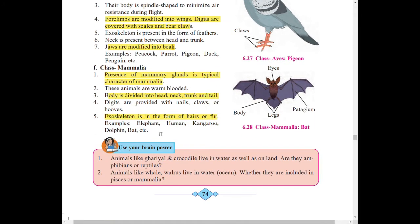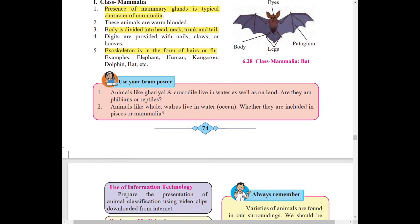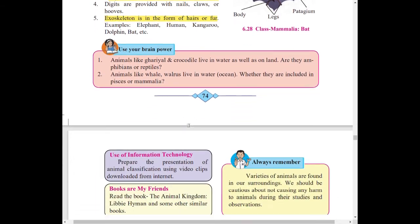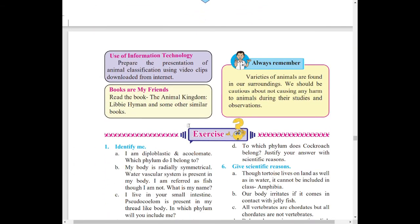Last class, that is Mammalia. Mammary gland is present and body is divided into four parts: head, neck, trunk, and tail. This is also important.